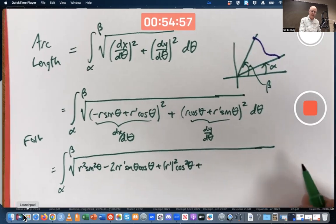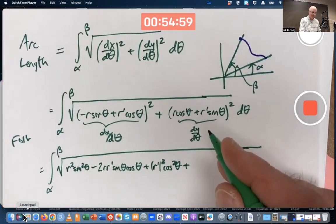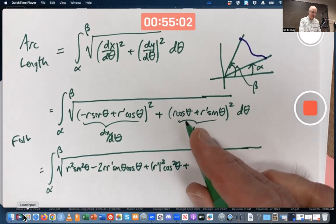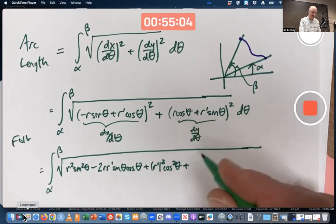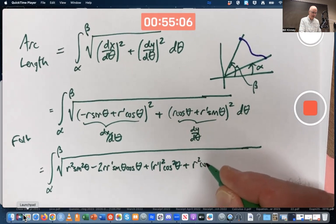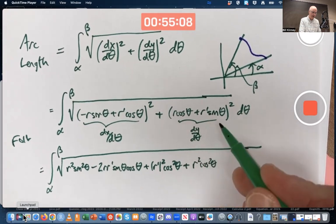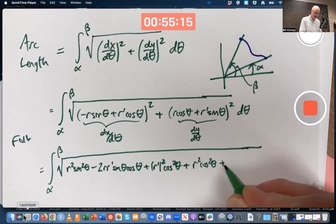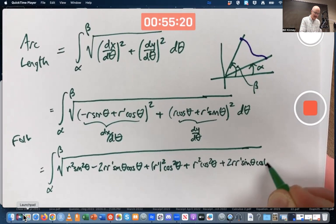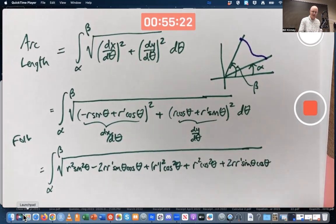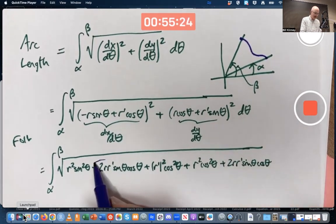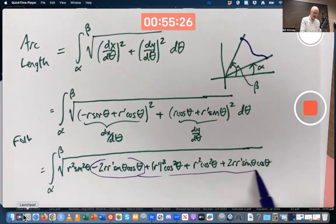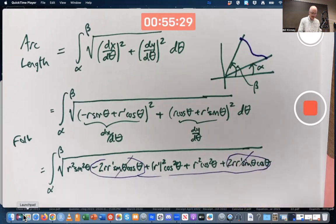And then, continuing, foil this part. First times first is r cos θ times itself, which is r² cos² θ. I'm looking right there. Outside and inside products are the same thing. So I get two of them, plus 2r r' sin θ cos θ. Oh, isn't that nice? These two things will cancel. So nice.